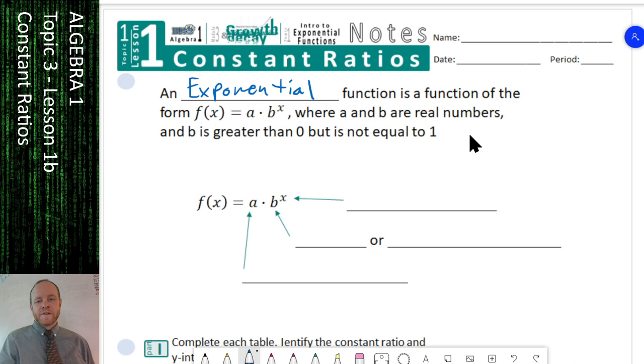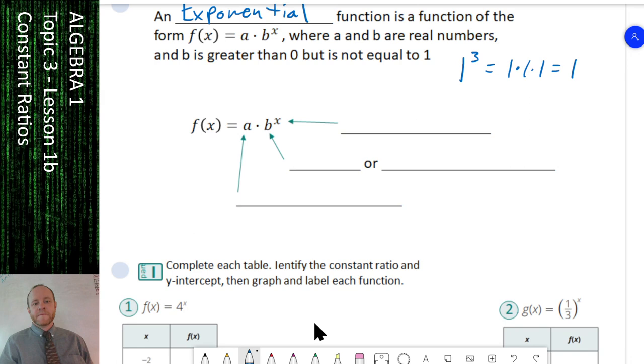If we were to plug in a 1 for b and raise it to any power, say to the third power, then we would have 1 times itself three times. Anytime we multiply 1 by itself, no matter how many times, it's going to give us 1 and get rid of our exponent. So if we put a 1 in there, it would eliminate the exponent and take it back to a linear equation, not even an exponential function.